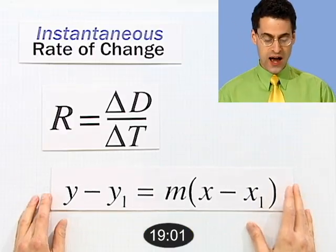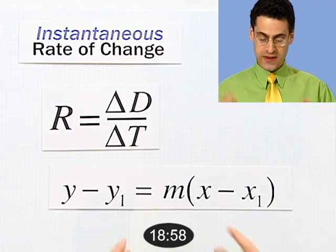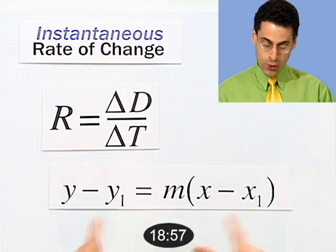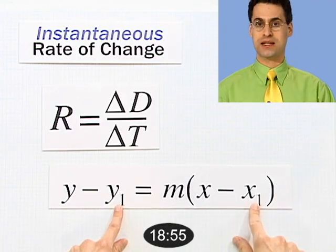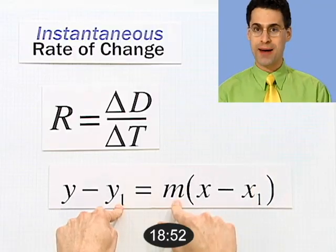Let me remind you about lines. The point-slope form is y minus y1 equals m times x minus x1. All you need is a point on the line (x1, y1) and a slope m. You give me those two pieces of information, I can always write down the line uniquely.